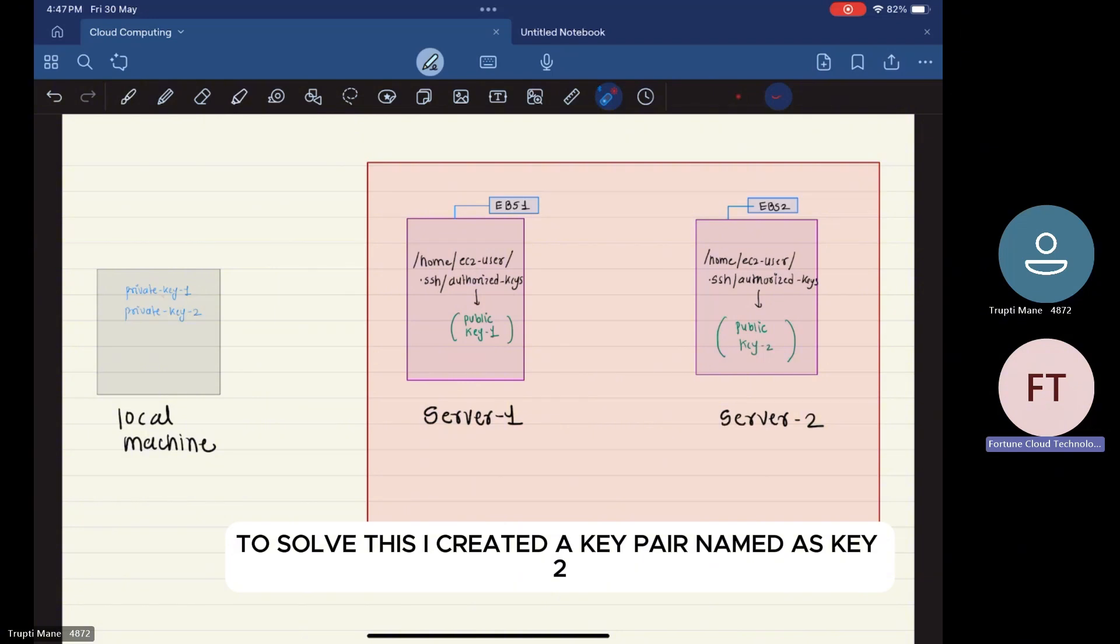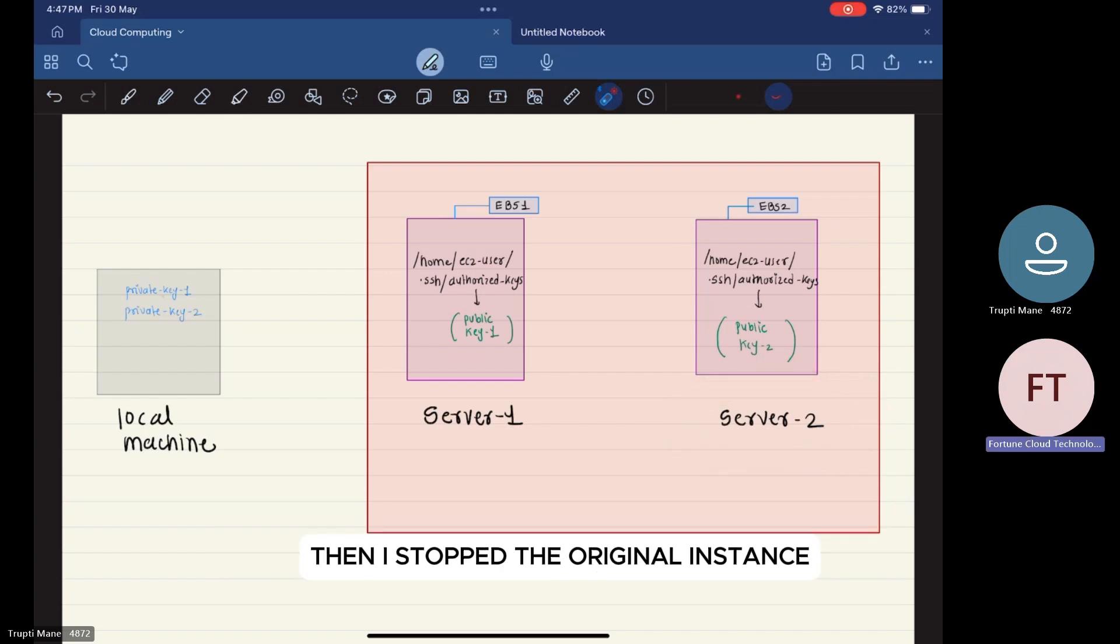To solve this, I created a key pair named as key2 and I launched a temporary instance named as server2. Then I stopped the original instance server1 because detaching the root EBS while the server is still in running state might corrupt the data.